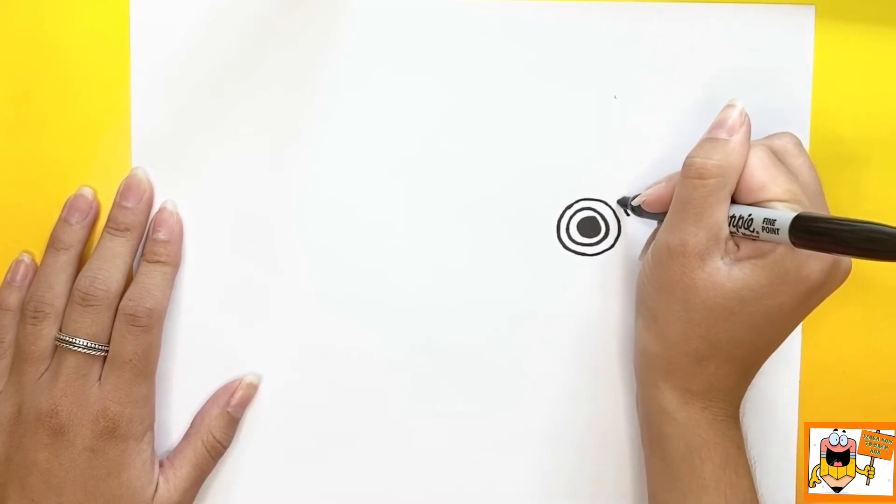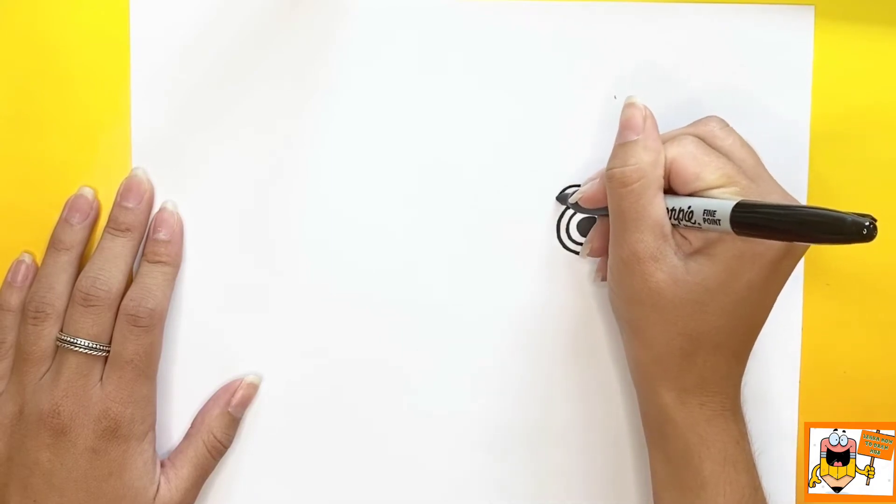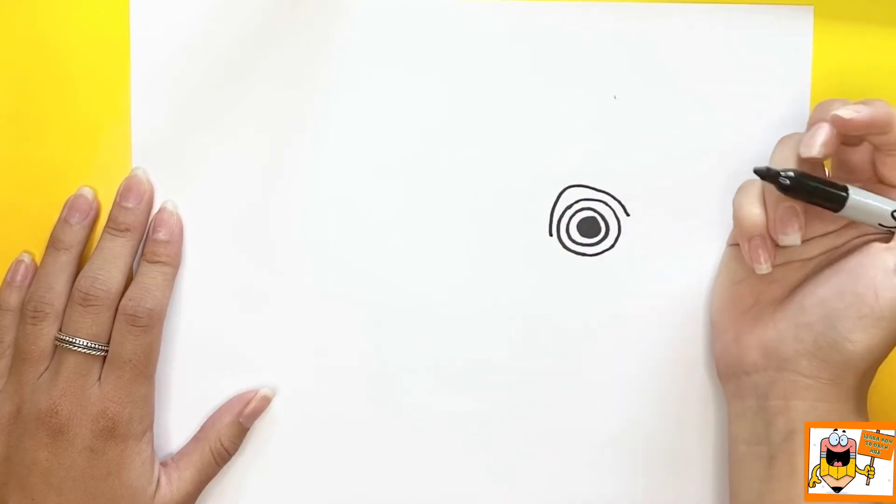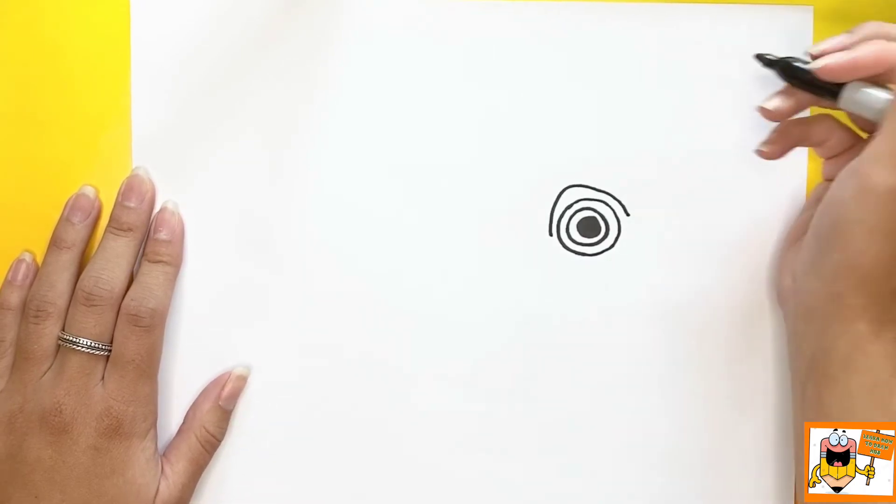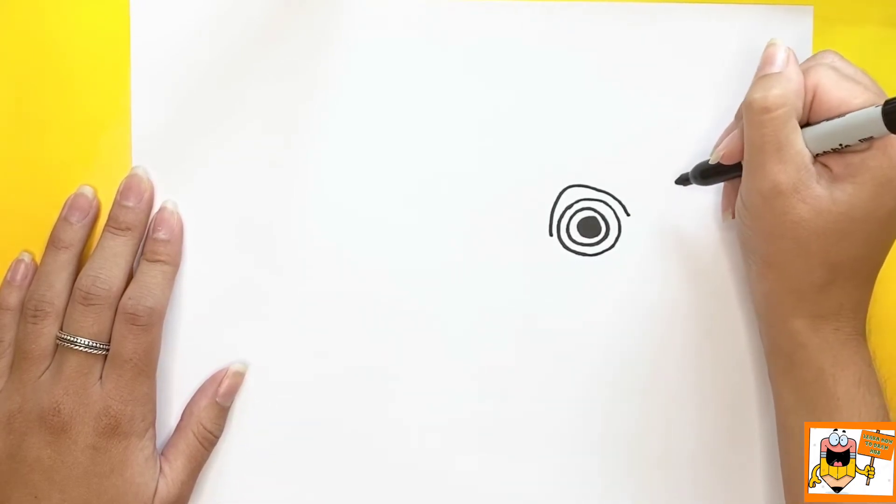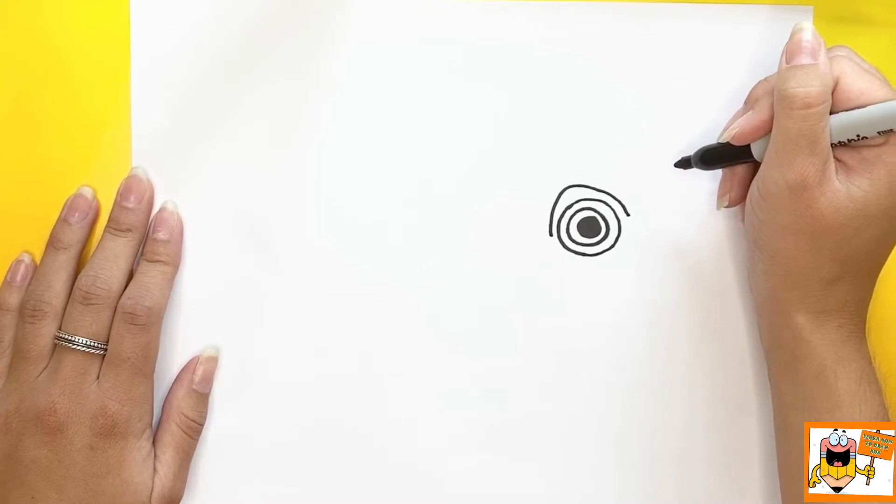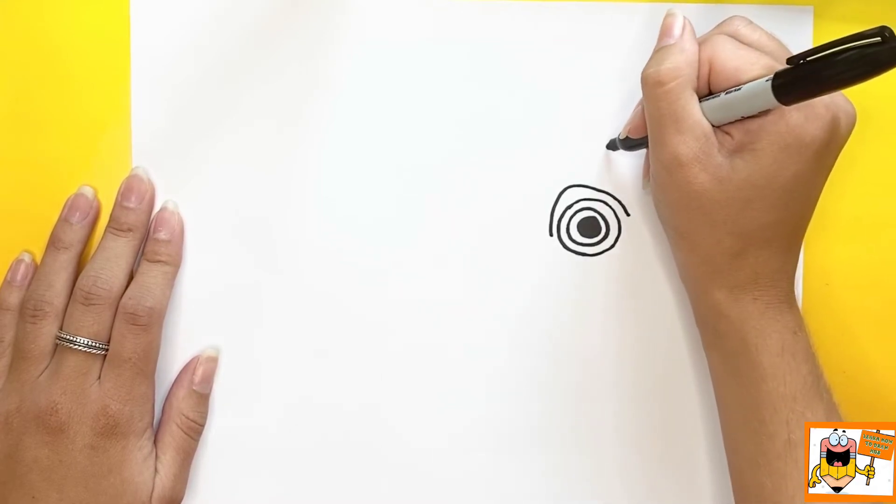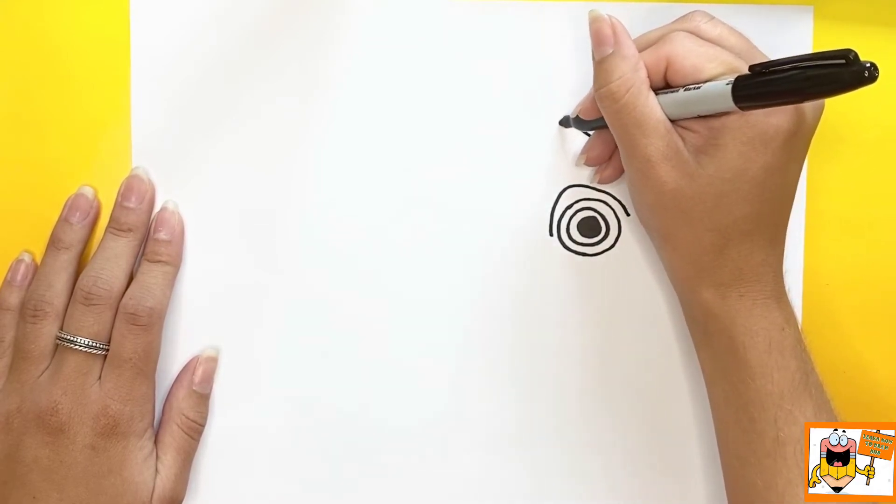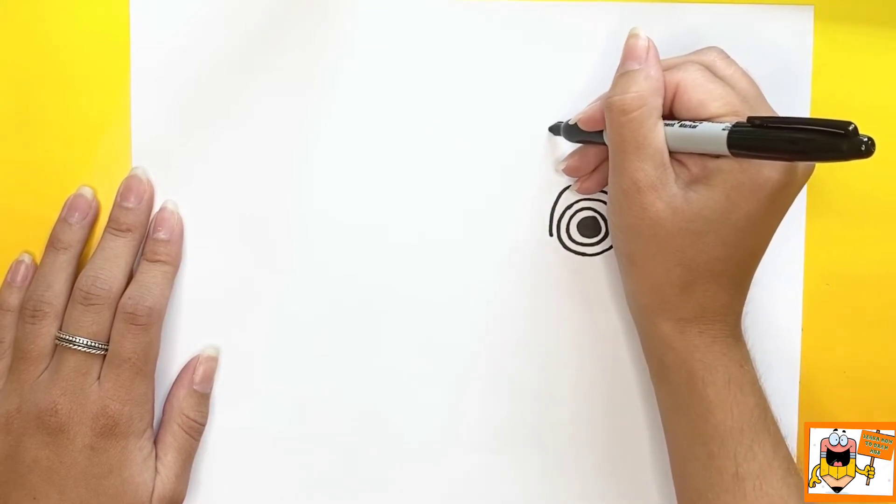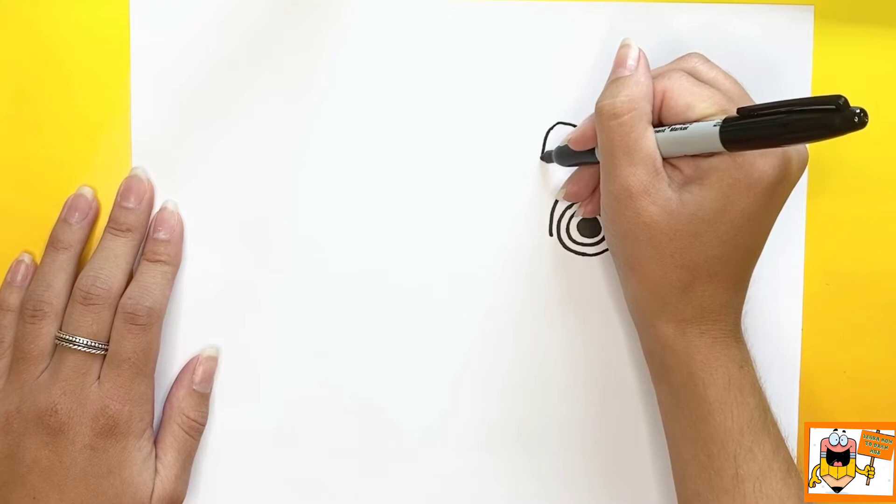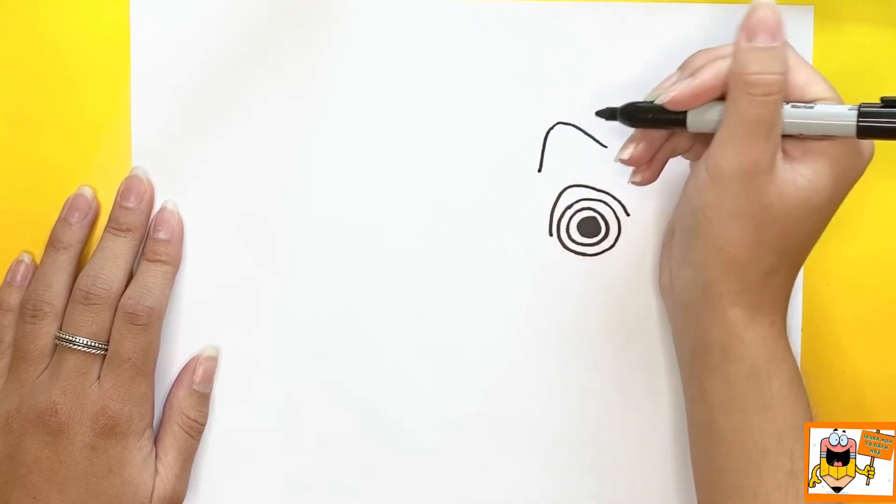Now we're going to draw a half triangle shape around the top of the eye. A little bit above the eye we just made, we're going to make another half triangle like shape.